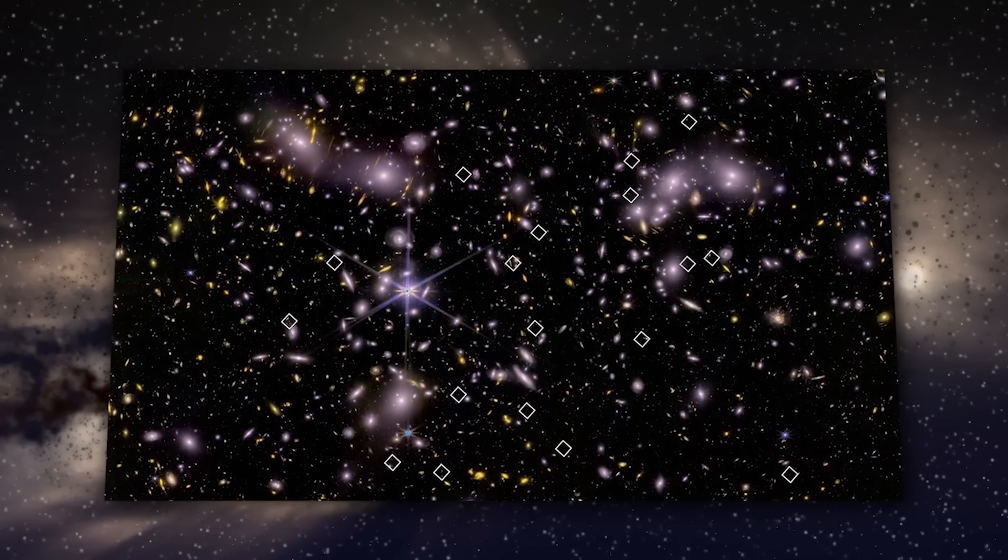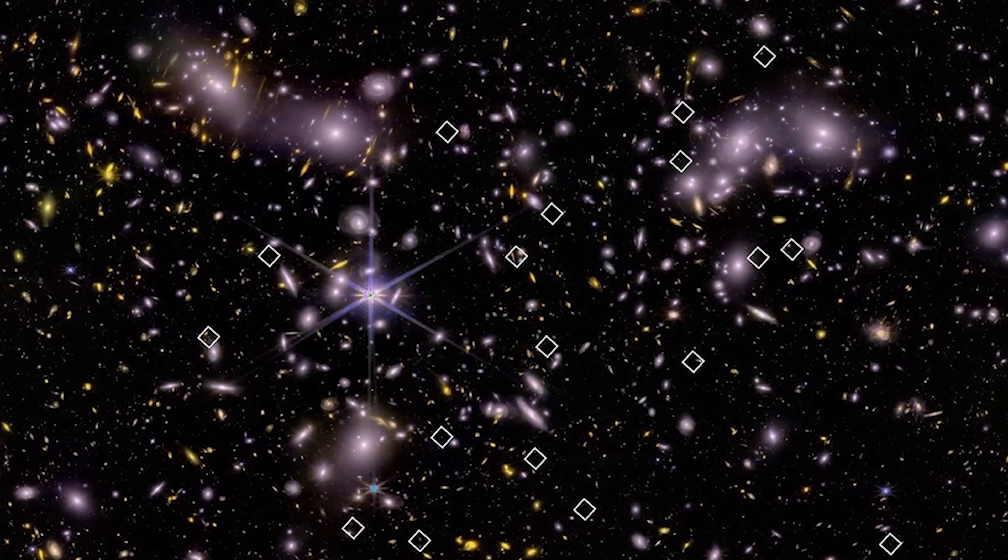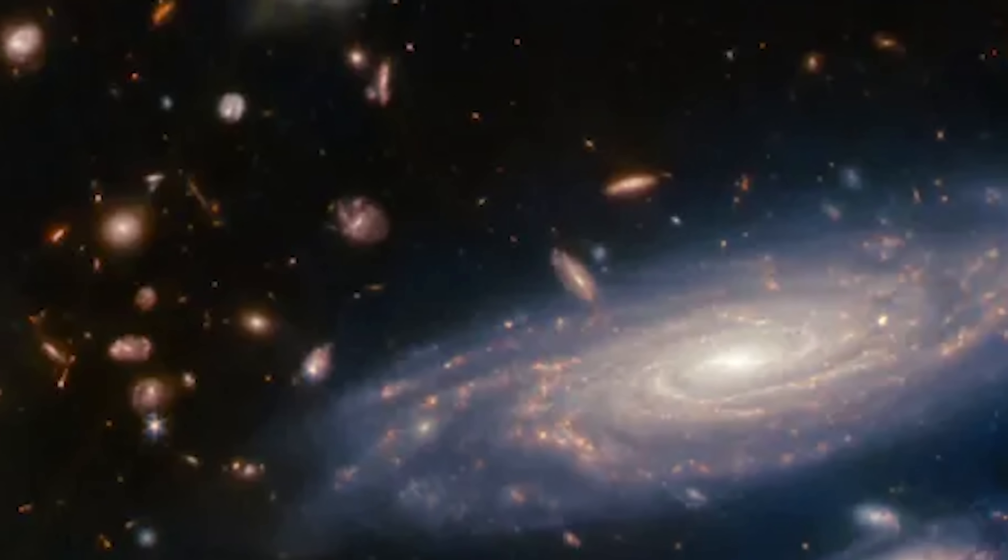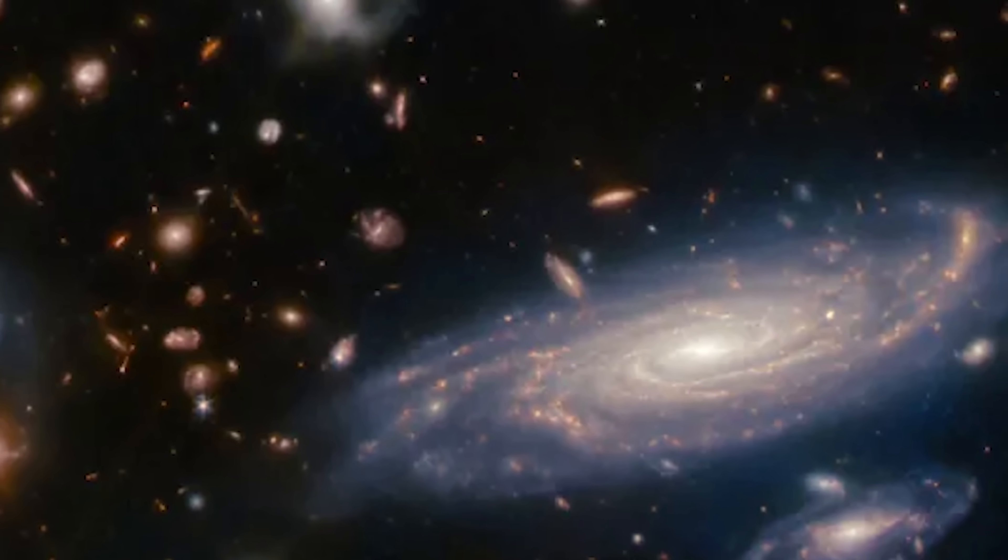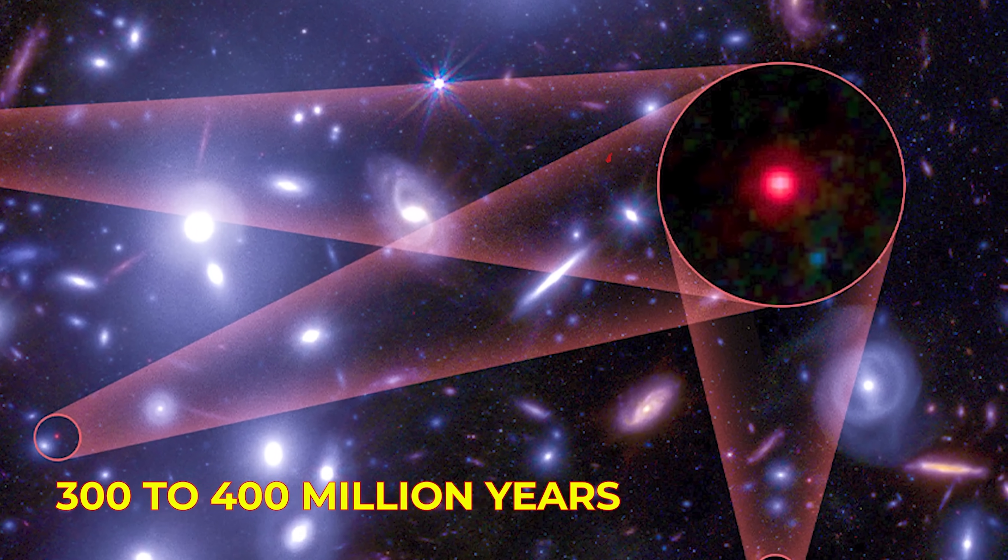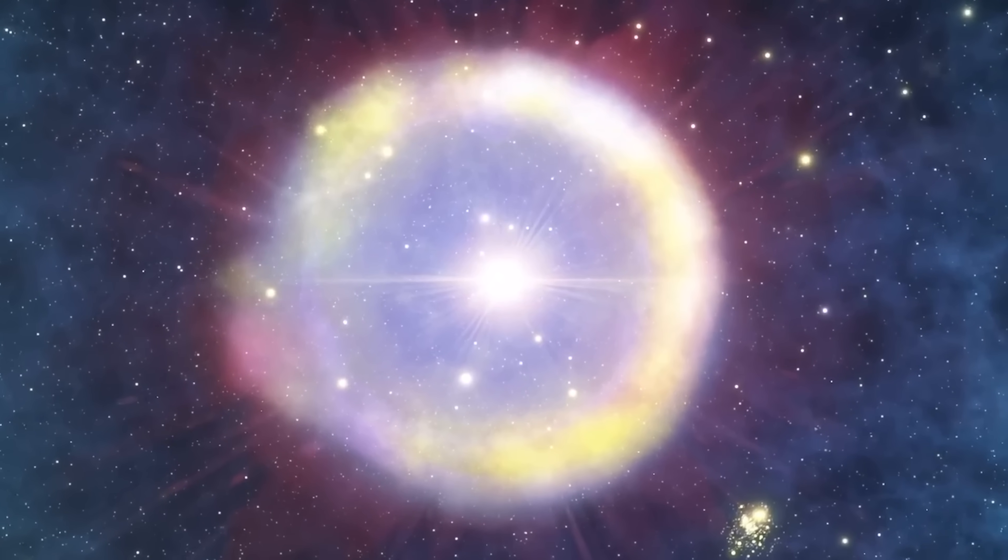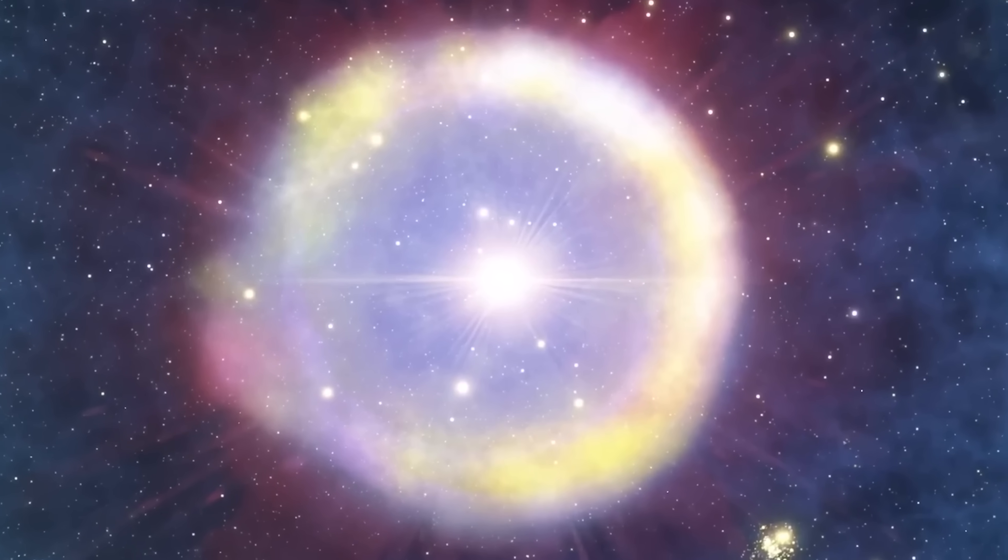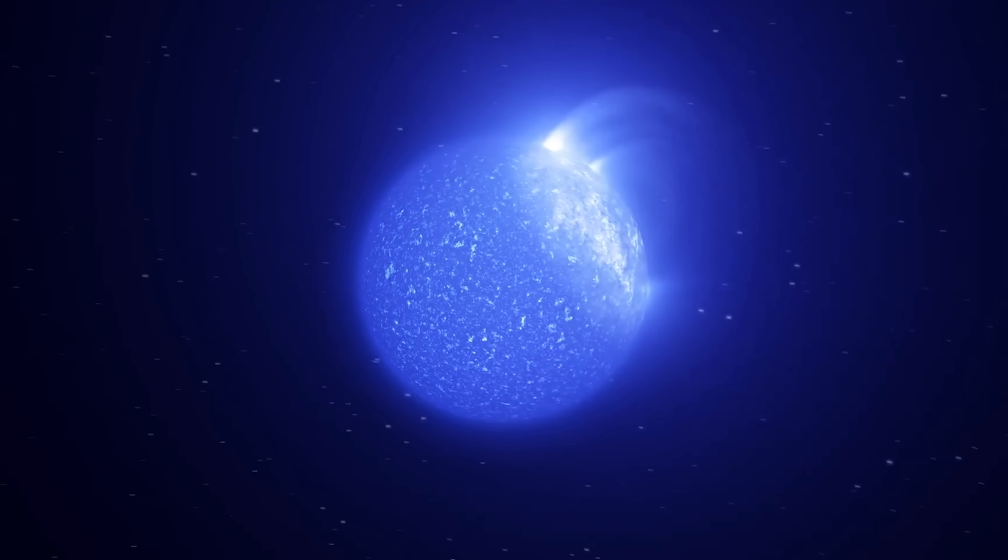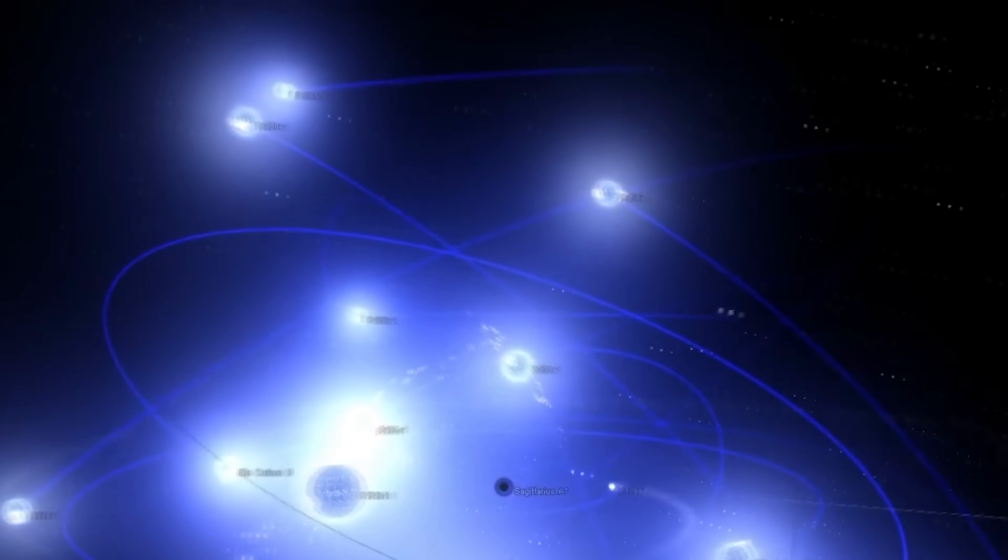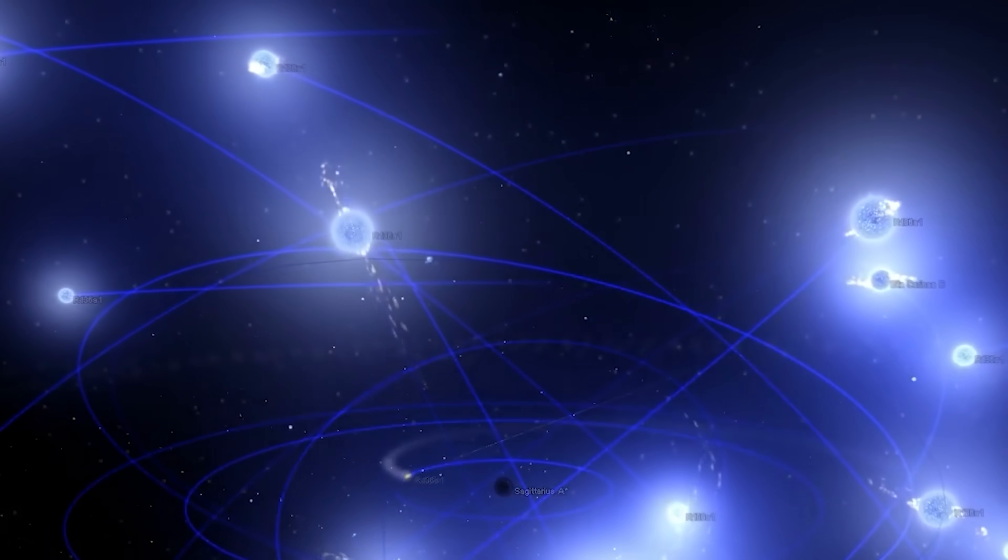The images captured by Webb reveal a series of galaxies that are both enigmatic and ancient, leaving scientists puzzled. Many are too intricately organized and structured to merely be nascent galaxies merging just 300 to 400 million years post-Big Bang. Traditionally, scientists anticipated star clusters with population three stars, hypothesized to be the first stars born in the universe.